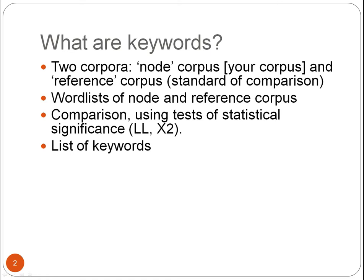The software produces word lists of the two corpora — lists of all the words and their frequency in each corpus. The software then compares these two word lists and identifies keywords with the help of tests of statistical significance, usually log likelihood or chi-square, and finally generates a list of keywords.